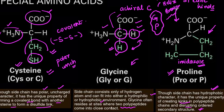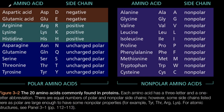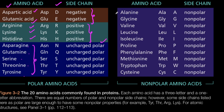Moving on — amino acids and their side chains: there are two amino acids with negative side chains — aspartic acid and glutamic acid. There are three amino acids with positive side chains — arginine, lysine, and histidine. Then there are six more which have no charge but are polar due to specific groups in their side chains: asparagine, glutamine, serine, threonine, and tyrosine. And all the remaining amino acids are non-polar amino acids.